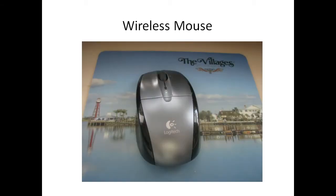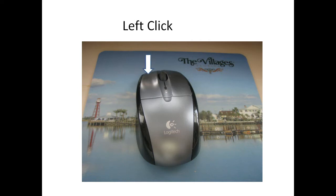Here is a mouse example. It is wireless, meaning it has a battery but connects to your computer without a wire. There is a left click, a right click, and a scroll wheel. Not all mice have scroll wheels.